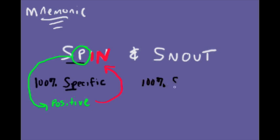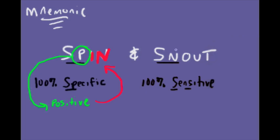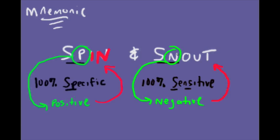And now for SNout. If you are using a test that is very sensitive, we refer to the second part of the mnemonic, SNout. Notice the first two consonants of both words are S and N. This time a negative test means we can rule the disease out. Tests that are sensitive help rule out diseases; however, they may lack specificity, meaning we might over-diagnose, and that is called a false positive.